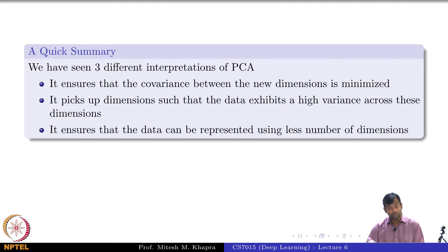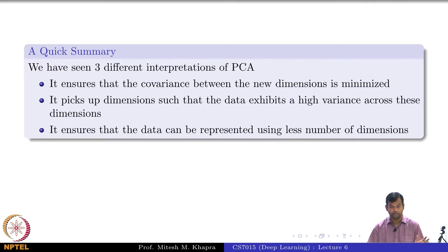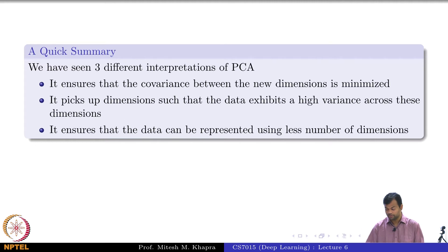This also ensures that the error in reconstructing the data by ignoring these dimensions is minimized — it is the lowest possible error. It also ensures that the covariance between the retained dimensions is zero, because we are able to diagonalize the covariance matrix of the transformed data.